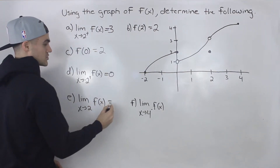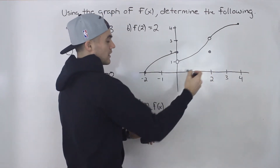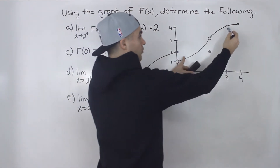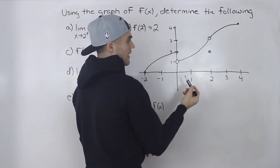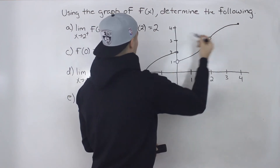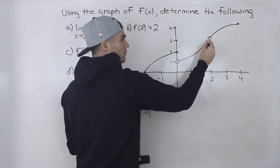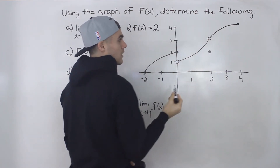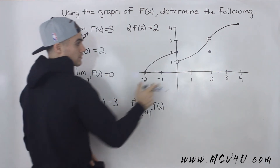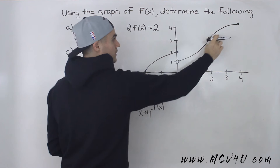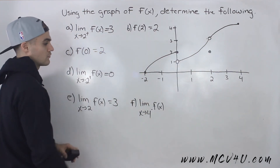The limit as x approaches two — we go back to this x value of two. In order for a limit to exist, both one-sided limits have to approach that same y value. Notice that the limit from the right side, which we calculated in part a, and the limit from the left side are both approaching that y value of three. So that limit exists and it's equal to three. Even though the function is defined at another y value, it's all about which y value the function is approaching from both sides.